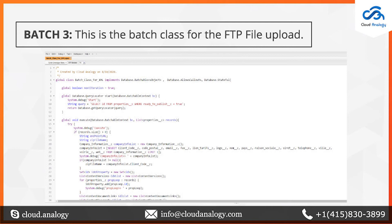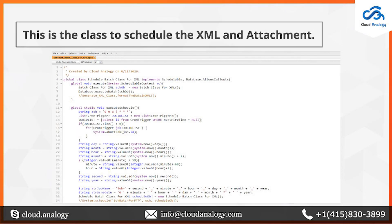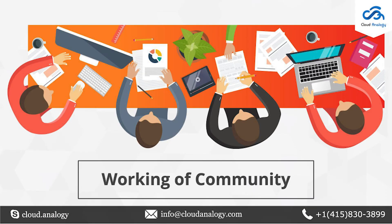This batch works on a daily basis and is scheduled at 9 AM in the morning. From this, all attachments go to AWS and the FTP server. We have also created a custom setting so you can customize the name of the zip file and the XML file by only changing the client code inside the custom setting. You can also schedule the XML and attachment uploads at whatever time you want.